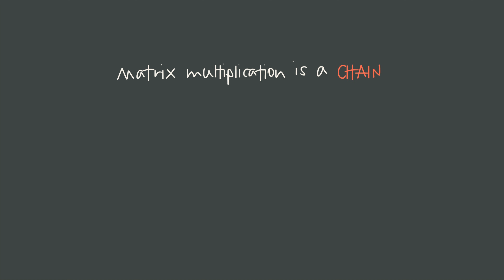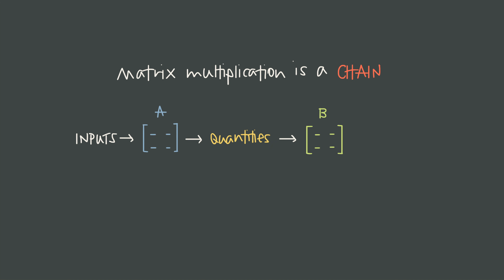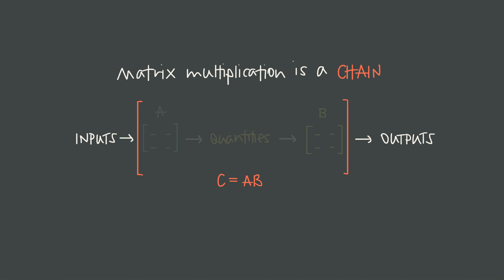Matrix multiplication isn't just about multiplying matrices — it's about combining systems. Think of a matrix as a way of organizing information. The multiplication rule is simply a logical way to take inputs, run them through two matrices at the same time, and get a set of outputs. Instead of getting from the inputs to the outputs in two steps, we can multiply the matrices to combine them into one matrix — so instead of having A and B, we have the product C, which chains these two steps into one.